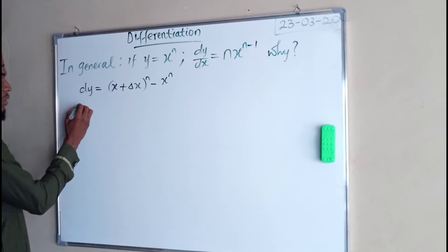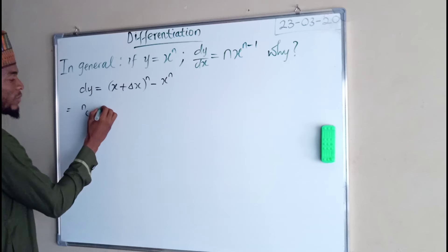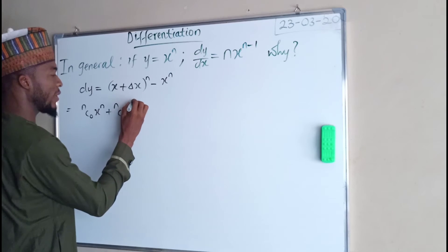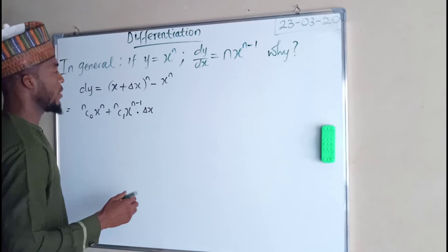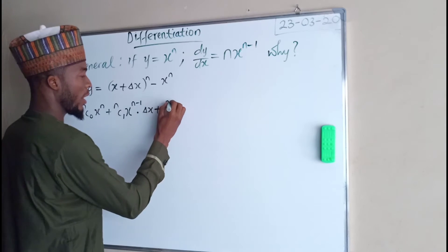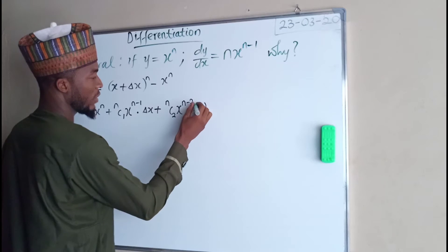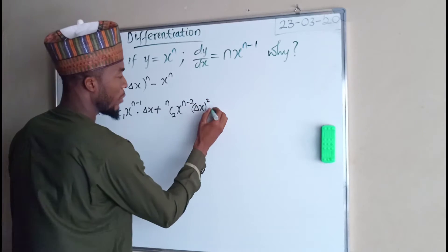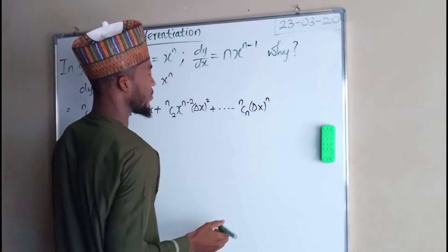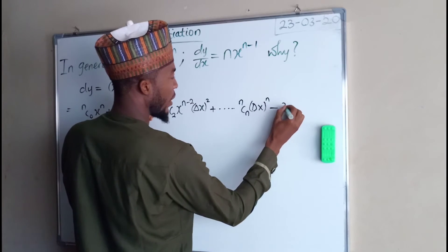From the binomial theorem, nC0 times x to the power of n, plus nC1 times x raised to the power of n minus 1 times dx as the second term, plus nC2 times x to the power of n minus 2 times dx to the power of 2 as the third term, plus — continuing up to — nCn times dx to the power of n. This is the full expansion. Then we subtract x to the power of n.